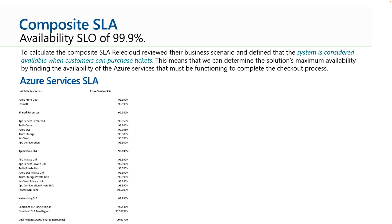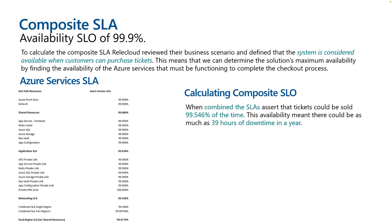Let's talk about picking the correct resources, specifically getting a service level availability (SLA) that we commit to for our customers. We want to hit an availability of 99.9%. To calculate that, for each Azure resource we have, we multiply the individual SLAs together. For example, Front Door at 99.990% multiplied by Entra ID at 99.990% gives us 99.98%.